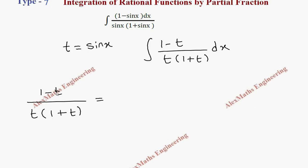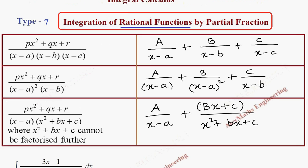We find the numerator degree is 1 and the denominator degree is 2 for the rational expression. We have two factors in the denominator. We already discussed the partial fraction rules — for different factors in the denominator, we use A over the first factor plus B over the second factor.